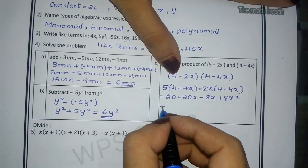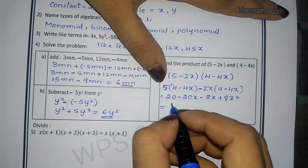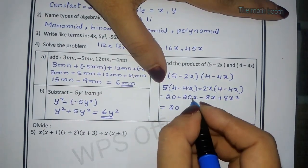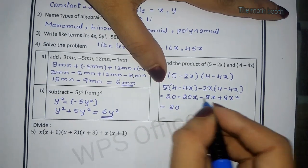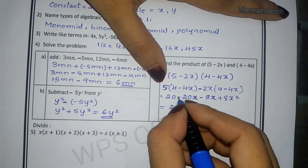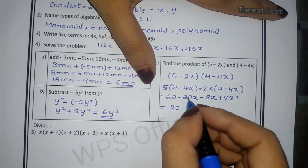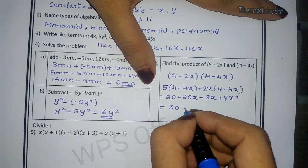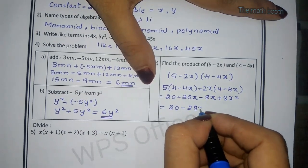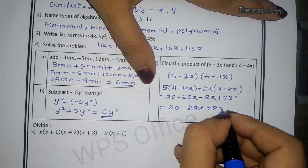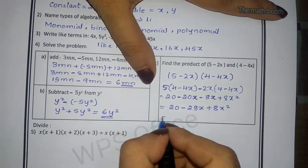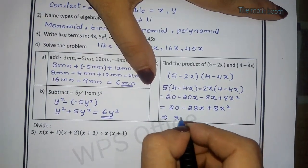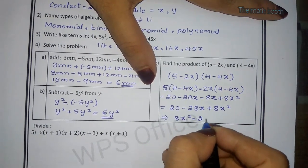Now we will write in proper form. 20, they are like terms. X terms are how many? These two are like terms, so minus minus is plus. 20 plus 8 is 28, but sign minus, so minus 28x plus 8x square. We can write in proper form also: first 8x square, then minus 28x, then plus 20. This is the answer.